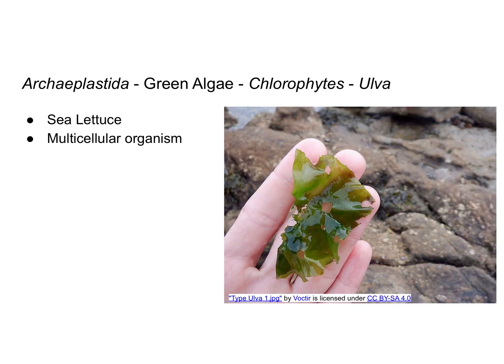Ulva is another type of chlorophyte, which is a type of green algae within the Archaeplastida. Colloquially, this is known as sea lettuce, and it is a multicellular organism.